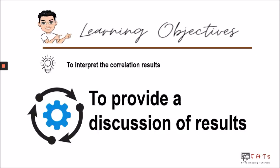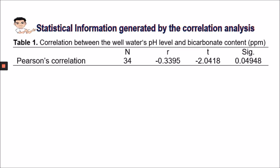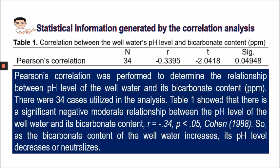Now let's present our discussion of results. In presenting the discussion of results, we have it in tabular form followed by paragraph form. In paragraph form, you may write: Pearson's correlation was performed to determine the relationship between the pH level of the well water and its bicarbonate content in parts per million.